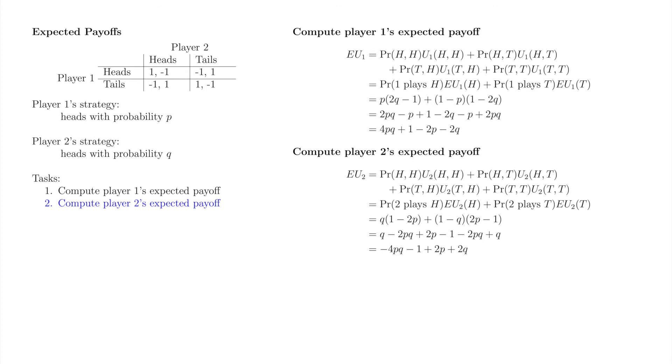After some algebraic tidying up, we obtain EU2 equals minus 4pq minus 1 plus 2p plus 2q.